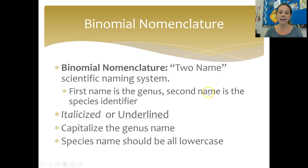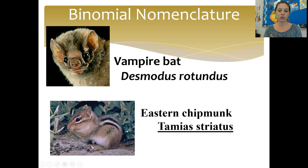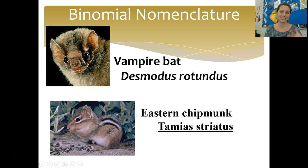There's a very specific way to write a scientific name: you either write it in italics or underline it. You always capitalize the first name, which is the genus, but the rest of the name should be lowercase. For example, the scientific name of a vampire bat is Desmodus rotundus — genus Desmodus capitalized, species identifier rotundus in lowercase. The eastern chipmunk's scientific name can be written in italics or underlined — either is totally acceptable.